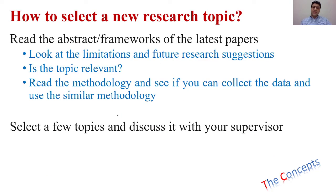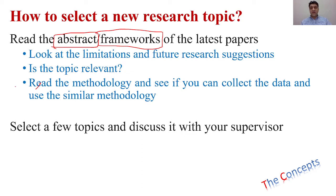When you have downloaded a few papers, look at their titles first. If the title is interesting and relevant, read the abstract, which will give you a clear idea about what has been done in that research. Also look at the framework — what variables have been used and what relationships. Make sure it is a latest paper because your topic needs to be current in order for it to be accepted as a proposal.